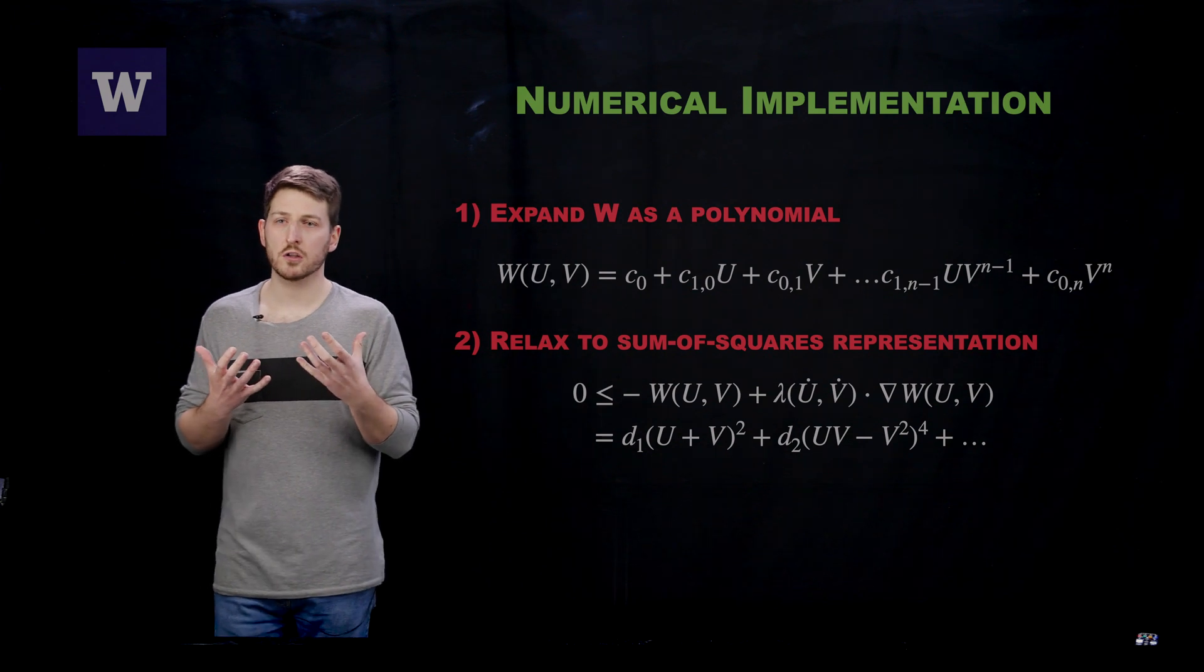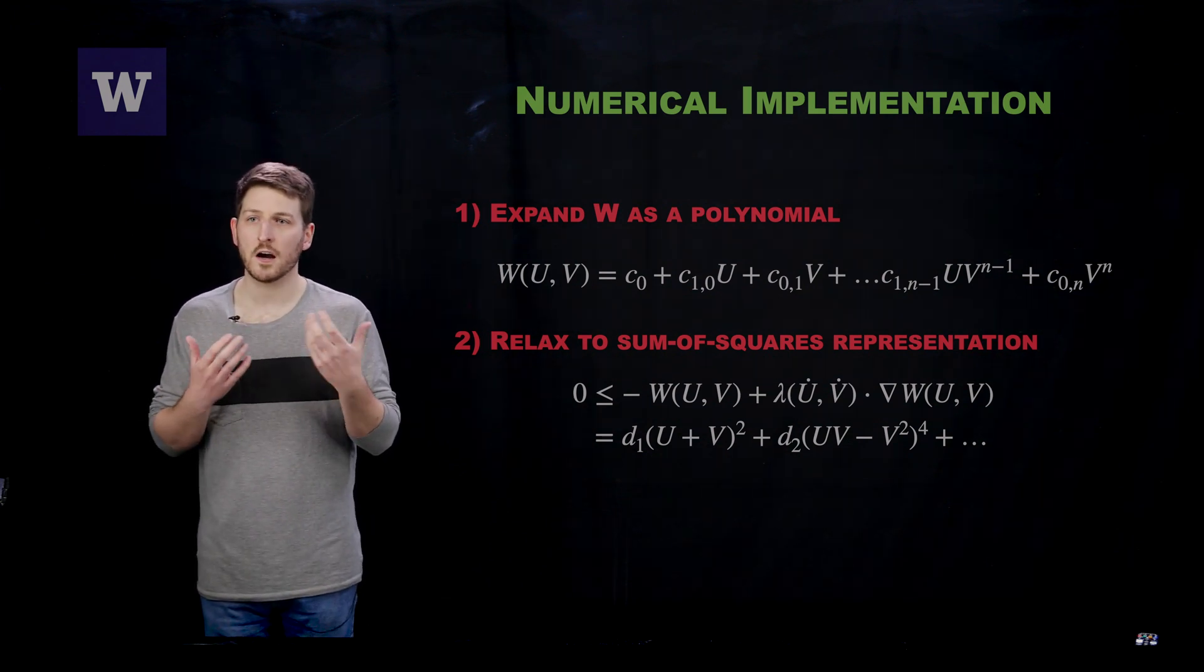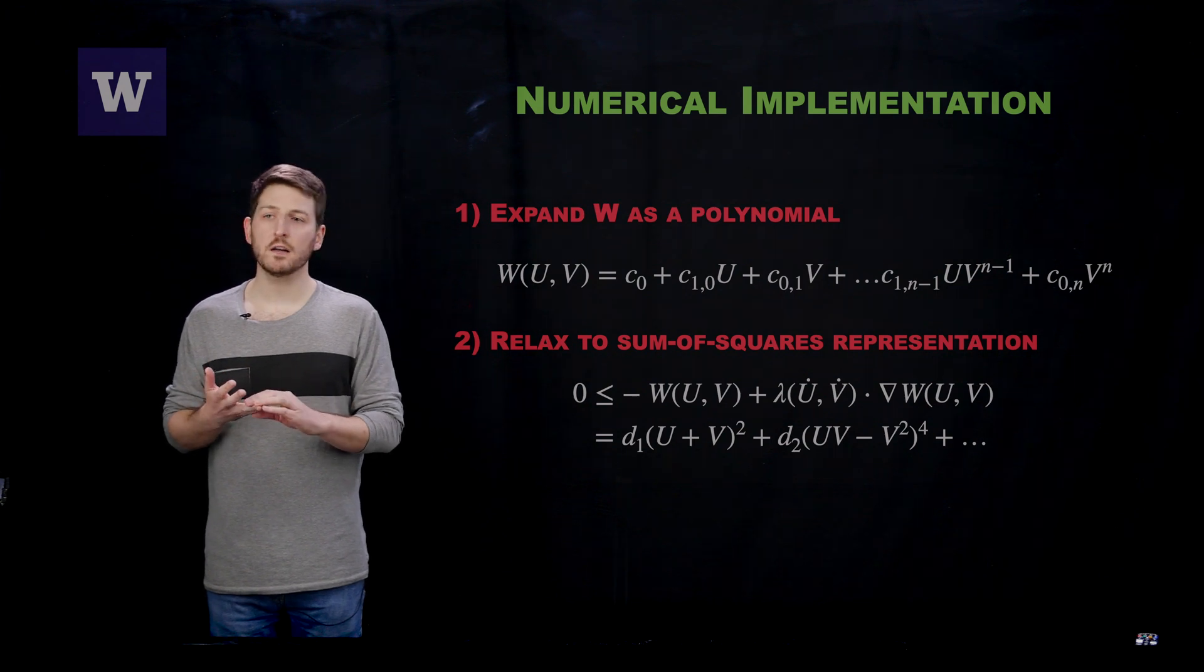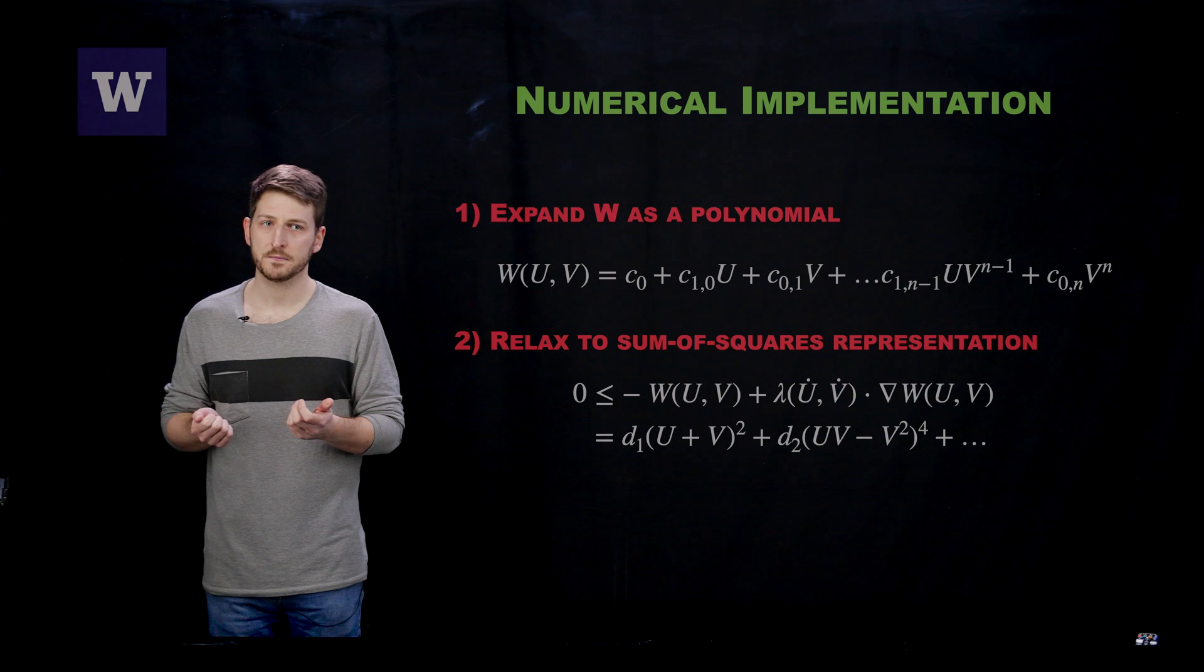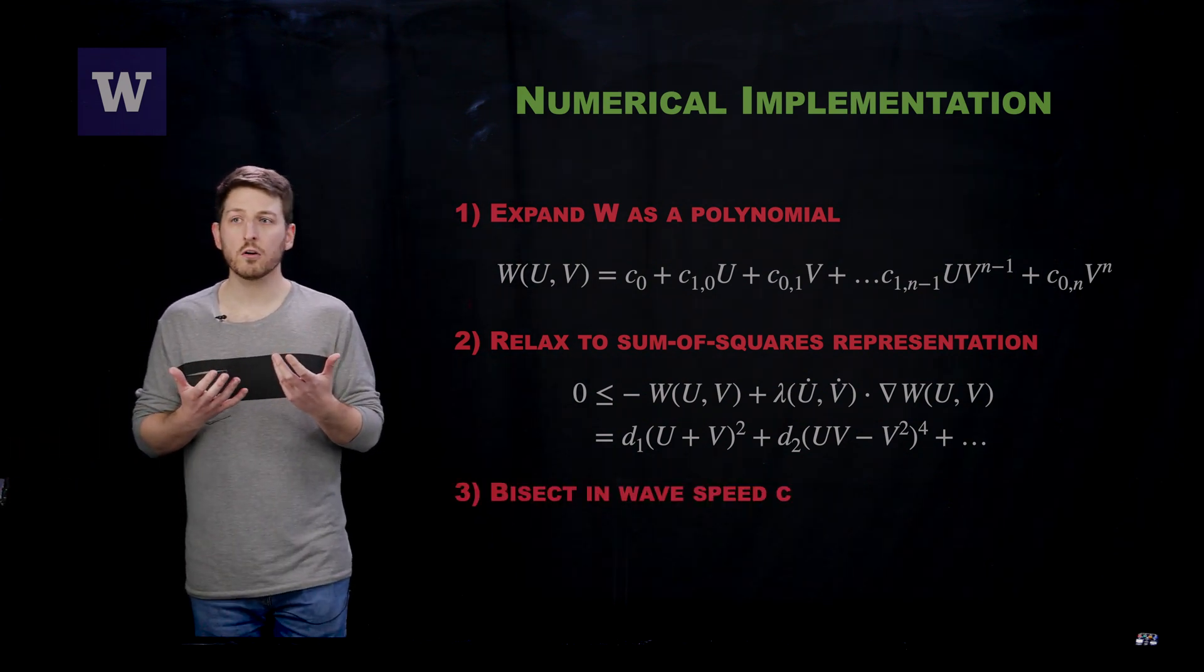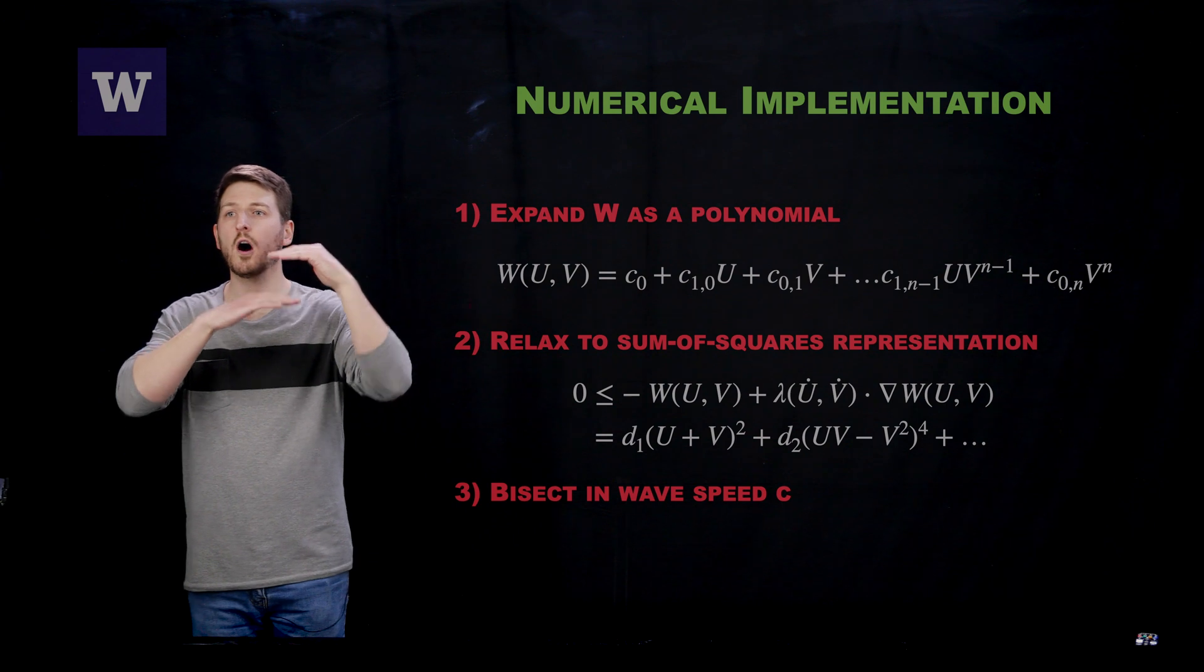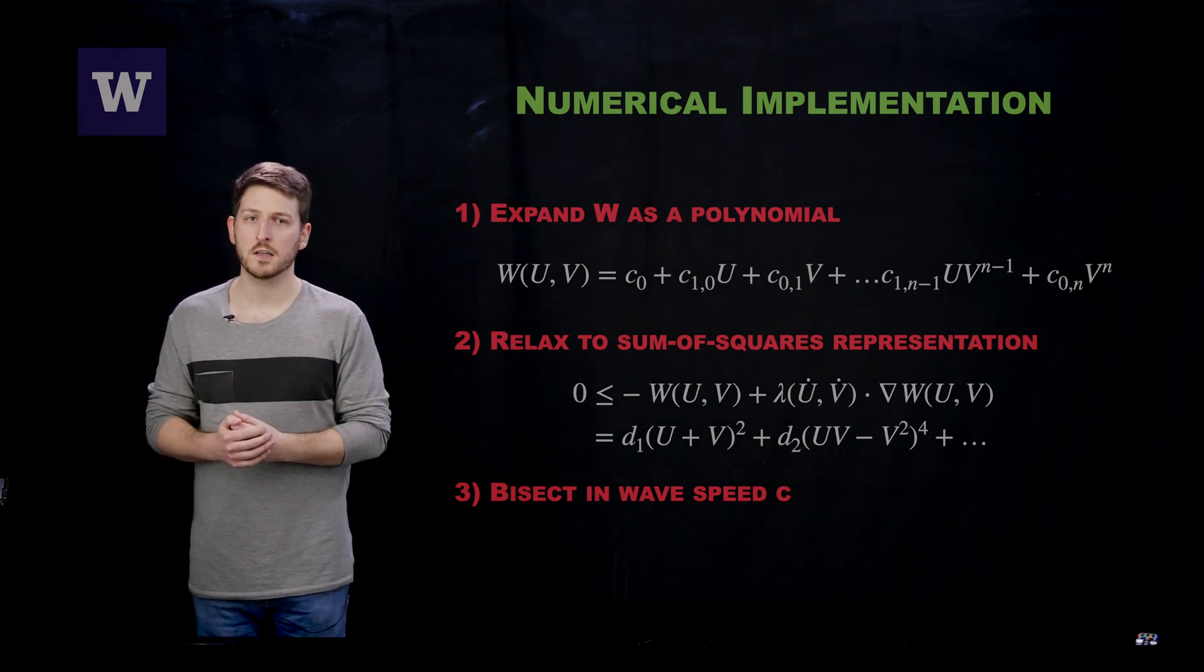By construction, a sum of squares function is necessarily non-negative. But the advent of this is that this can be achieved in polynomial time and can be done quickly and efficiently using modern numerical programming such as MATLAB. Then what we are going to do is confirm this for multiple different wave speeds in order to get upper and lower bounds on that minimum wave speed that should be present in the monostable system.